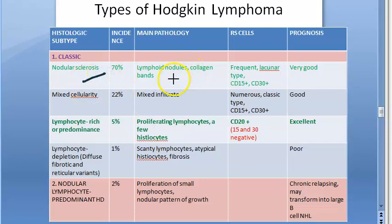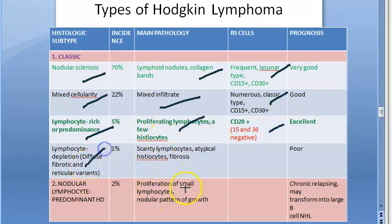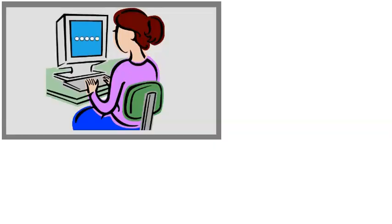Final table summary: nodular sclerosis — lacunar RS cell, collagen bands; mixed cellularity — classic RS cell, many cell types; lymphocyte rich — popcorn RS cell, abundant lymphocytes; lymphocyte depletion — pleomorphic RS cell, scanty lymphocytes, worst prognosis. That covers everything regarding the types of Hodgkin disease and types of Reed-Sternberg cells. See you in the next video.